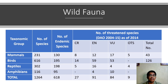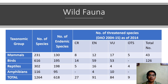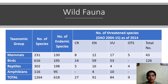These are the numbers of discovered animals in the Philippines and their conservation status according to DAO 2004-15. CR stands for Critically Endangered, EN for Endangered Species, VU for Vulnerable, and OTS for Other Threatened Species. Overall, we have 213 threatened species out of 1,264. These numbers are very high and need specific action to stop this decline.